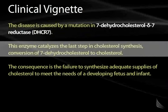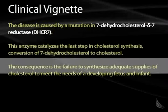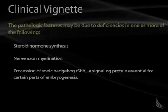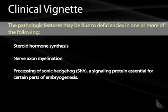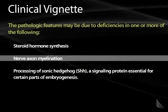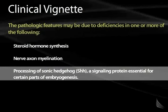DHCR7 catalyzes the last step in cholesterol synthesis: the conversion of 7-dehydrocholesterol to cholesterol. The consequence of this mutation is failure to synthesize adequate cholesterol to meet the needs of a developing fetus and infant. Pathologic features may include defective steroid hormone synthesis, defective nerve axon myelination, and defective processing of the signaling protein Sonic Hedgehog, which is essential for certain parts of embryogenesis — potentially accounting for the congenital anomalies seen.